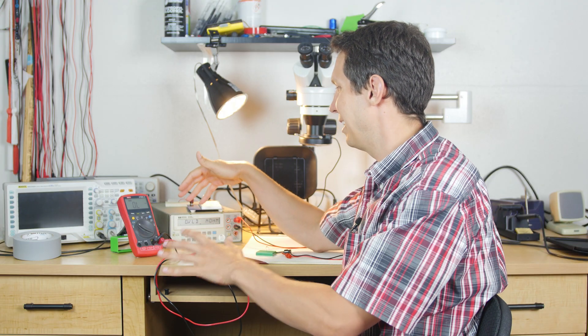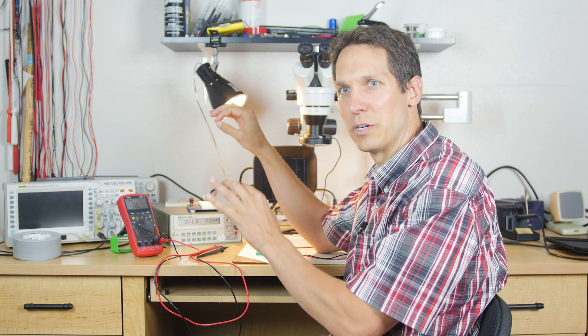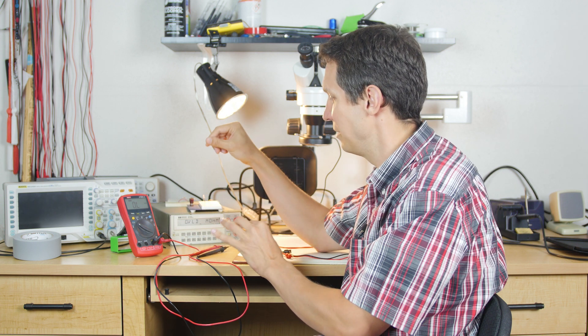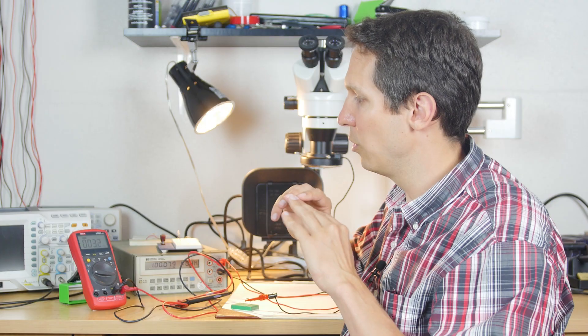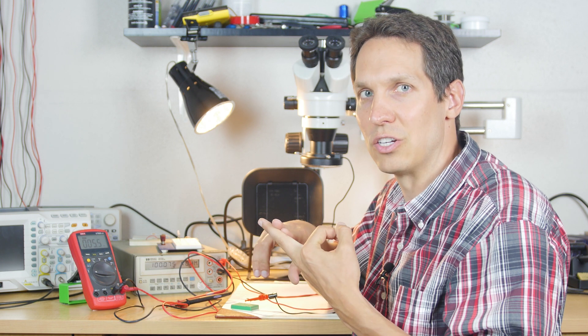Now both of these can do different things - they obviously have their pros and cons - but for right now we're going to focus on their most basic features. The three things we'd like to talk about today are checking the resistance, checking the voltage, and checking the current.